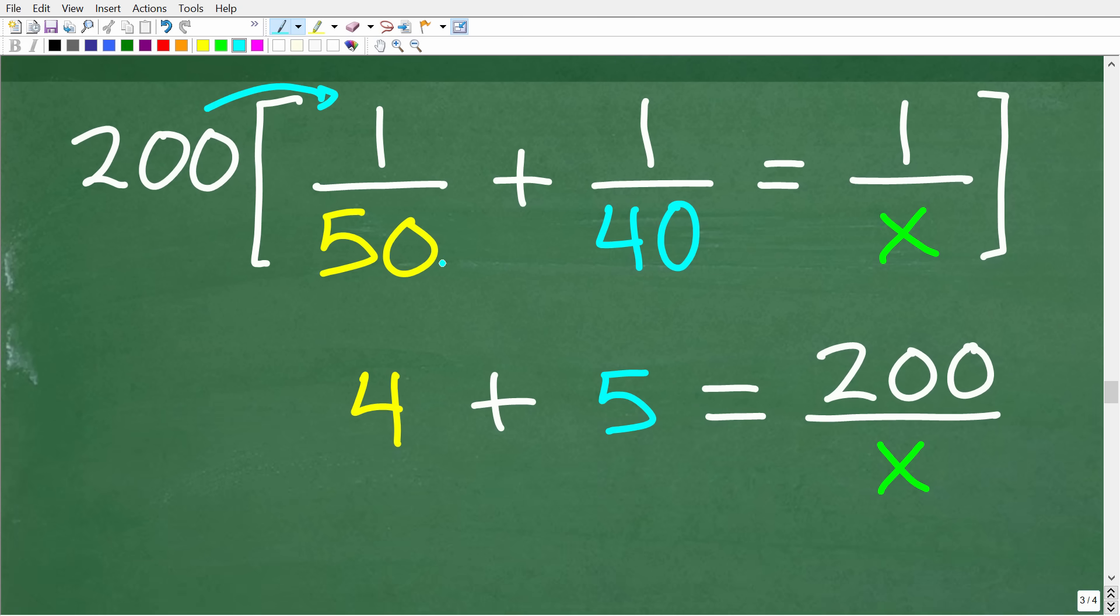So, 200 times 1 over 50. Well, 50 goes into 204. Plus, now remember, we have to distribute or multiply 200 by everything in this equation. So, 200 times 1 over 50 is 4. 200 times 1 over 40 is 5.